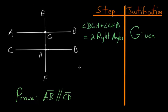And we need to prove that they're parallel to each other. But this time we know that this angle here, BGH, and this angle GHD, these both add up to two right angles. So with this knowledge we can prove that AB is parallel to CD.